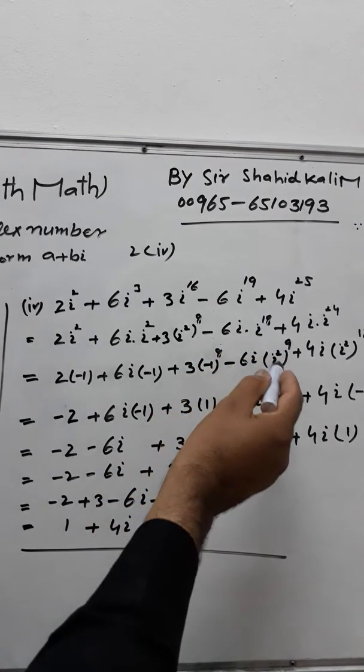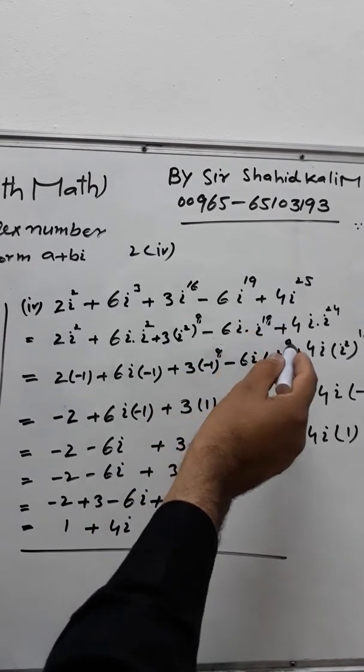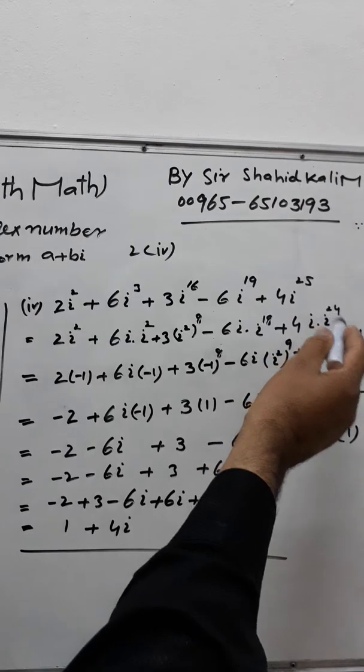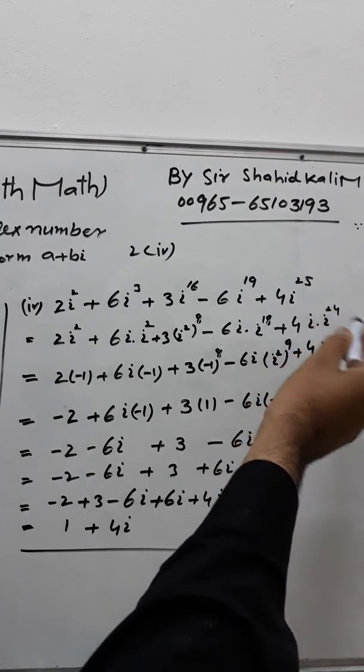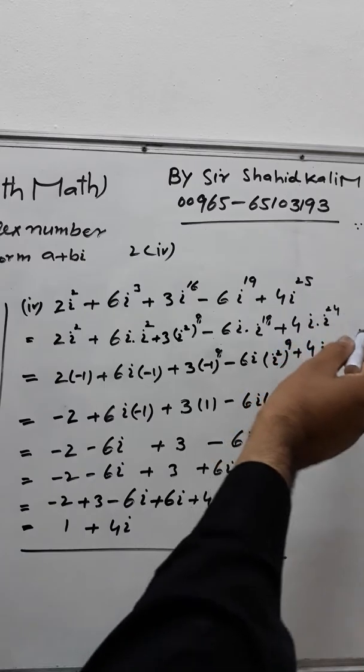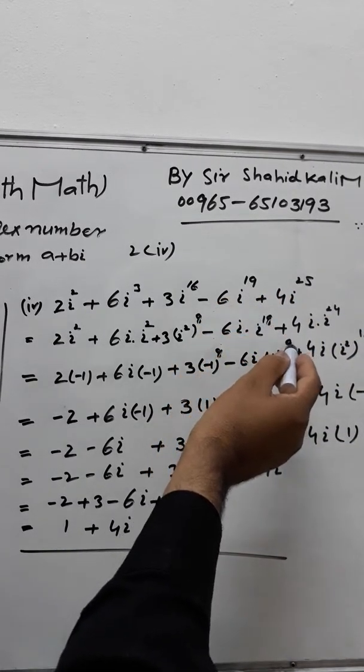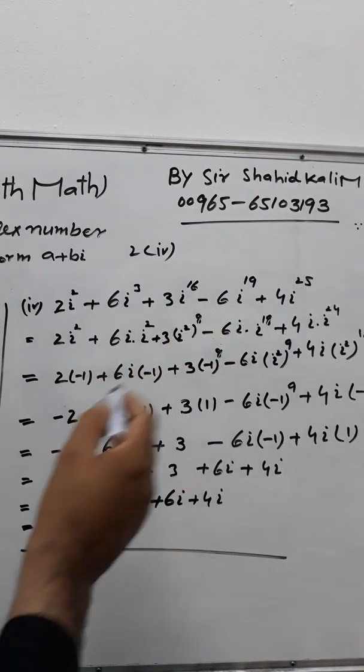This is about 8 minus 6i into i² to the power 9. First of all write this one, 4i and i² to the power 12. 24 we made it half 12, 18 we made 9, 16 we made 8.